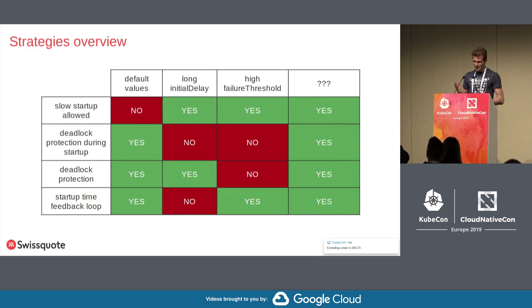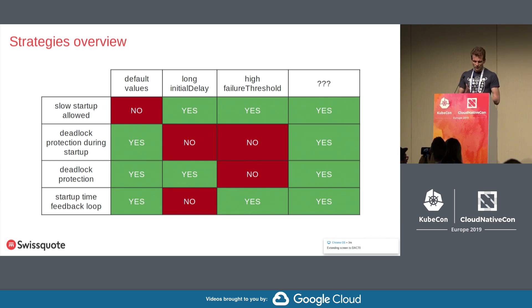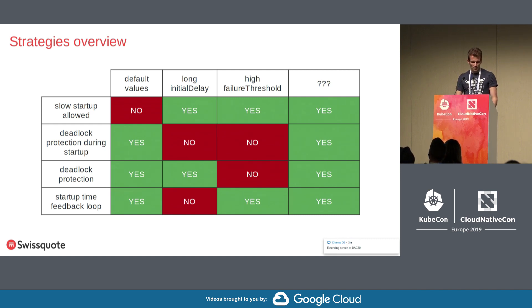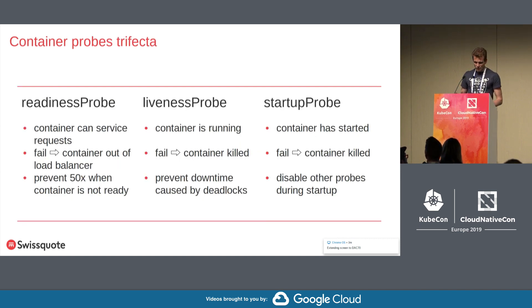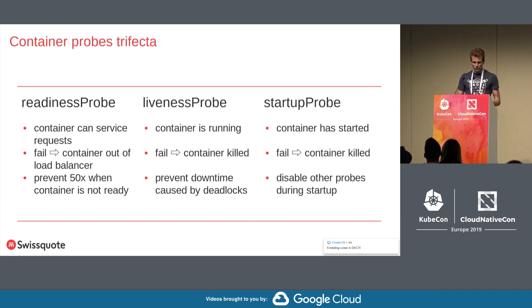As you can see, none of these strategies really work. Numbers one and three work well when the container starts rapidly, and the second one has a fundamental problem because it mixes the alive and the started state. So what can we do? Finally, after months of discussions and iteration with the community, we came up with the idea of a third probe called the startup probe.